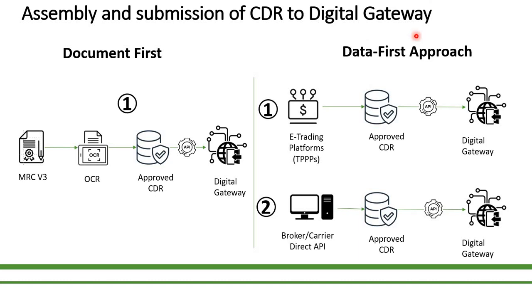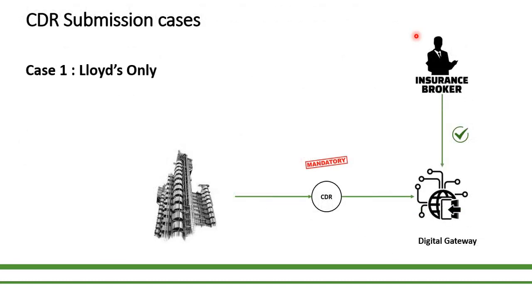Now let's jump into the various scenarios through which the CDR can be submitted to the digital gateway. Scenario number one: the slip is having Lloyd's syndicates only. When Lloyd's syndicates are the only participants in the slip, the written line will automatically trigger the CDR submission. It is mandatory to submit the CDR to the digital gateway, even if the CDR contains only partial information.